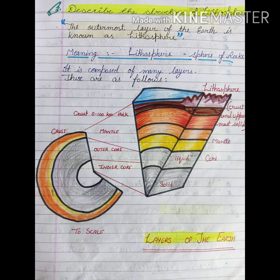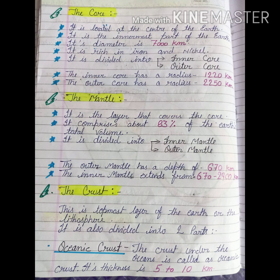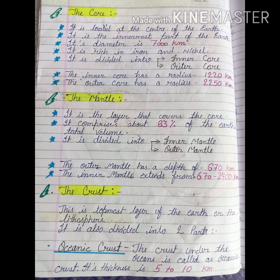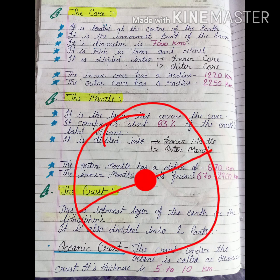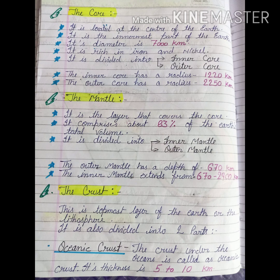The core is the innermost and center part of the earth. Its diameter is 7,000 km. It is rich in iron and nickel. It is divided into two parts: the inner core and the outer core. The inner core has a radius of 1,220 km and the outer core has a radius of 2,250 km.